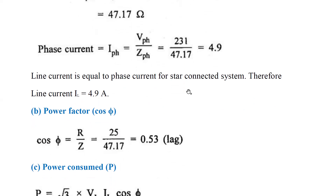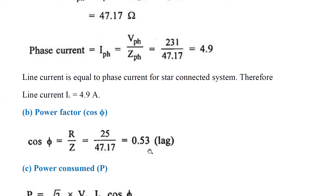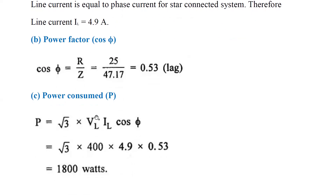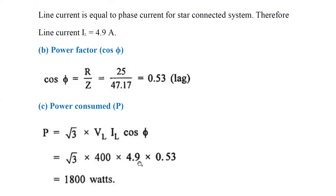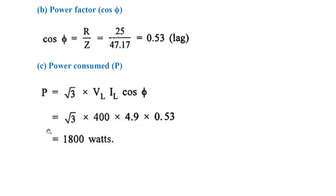Next, we need to calculate the power consumed. Power consumed P is equal to root 3 times VL times IL times cos φ, as we have seen in our previous classes. Substituting: root 3, VL is 400 volts, IL we calculated as 4.9 amperes, and cos φ is 0.53. Calculating this gives us a power consumption of 1800 watts.